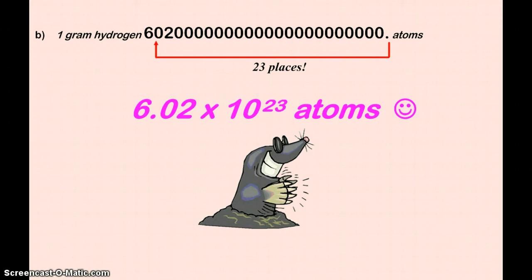We can also have really large numbers, like with the mole. So again, one gram of hydrogen, its molar mass has that many atoms. Much easier to write 6.02 times 10 to the 23rd, saying that we moved that decimal 23 places to the left.